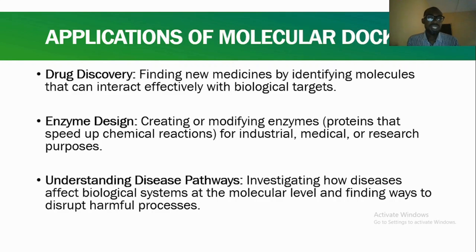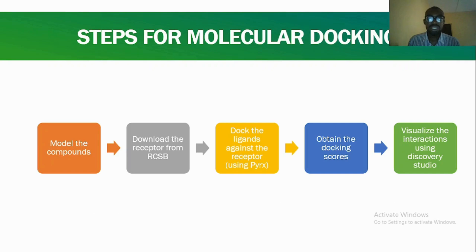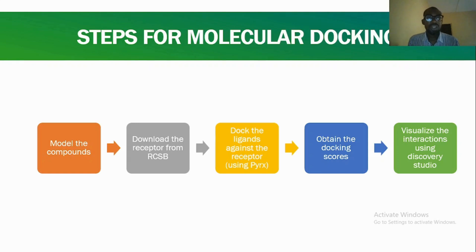It's also important we understand how diseases affect biological systems, because by knowing that, we would know how to disrupt those biological systems — and we use molecular docking for that as well. There are several steps for molecular docking in literature, but here they are simplified. The first thing is to model your compounds — you can use ChemDraw and then convert to 3D using Chem3D, or you can use Avogadro. After that, it's important you download the receptor you're working with from the protein of the disease or microorganism, and you can find the correct enzyme through literature.